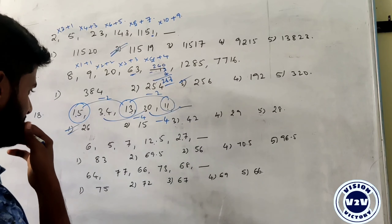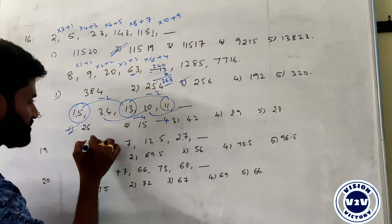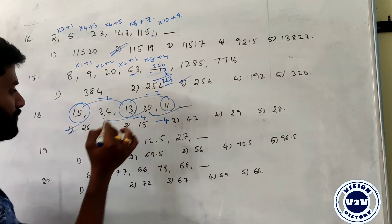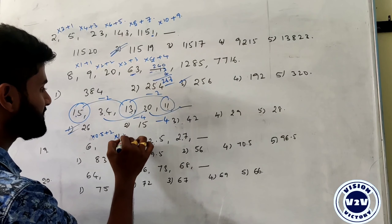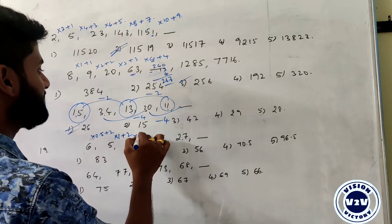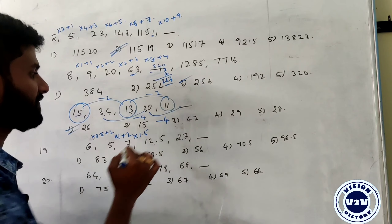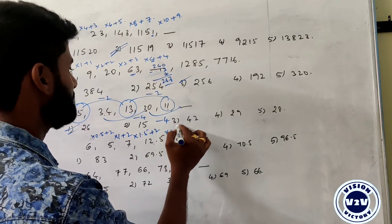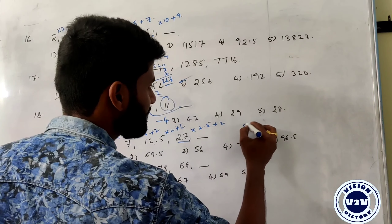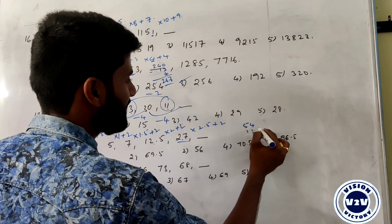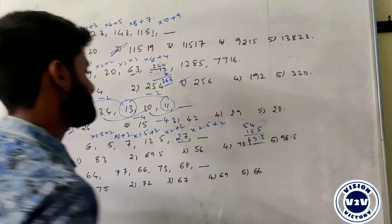Next: 6, 5, 7, 12.5, 27. The pattern: 6 times 0.5 plus 2 = 5; 5 times 1 plus 2 = 7; 7 times 1.5 plus 2 = 12.5; 12.5 times 2 plus 2 = 27. So next: 27 times 2.5 plus 2 = 67.5 plus 2 = 69.5. The answer is 69.5.